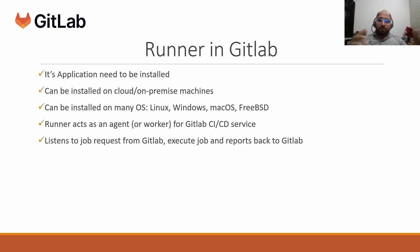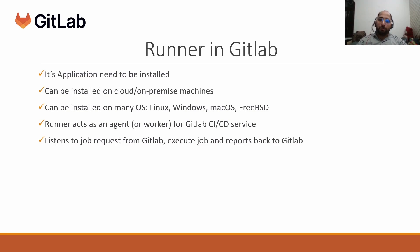Once the registration is done and the connectivity is set up between the GitLab runner and the GitLab instance, the GitLab runner acts as an agent — a worker for the GitLab CI/CD service. As soon as there is a change, it listens to the job request from GitLab, executes that job, and reports back to GitLab that execution has been completed. This is the overall purpose of the runner.